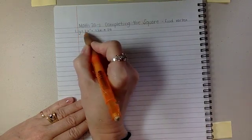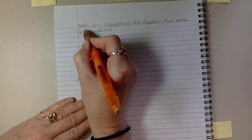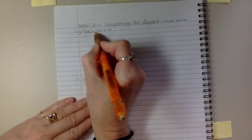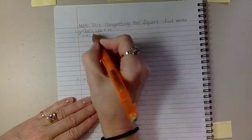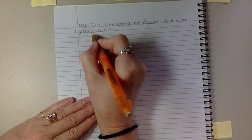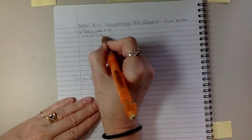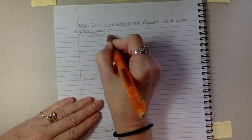This is going to be first, you're going to factor out whatever is with the x squared from the x squared and the x. So 2, and then we'll have x squared plus 6x plus 14.